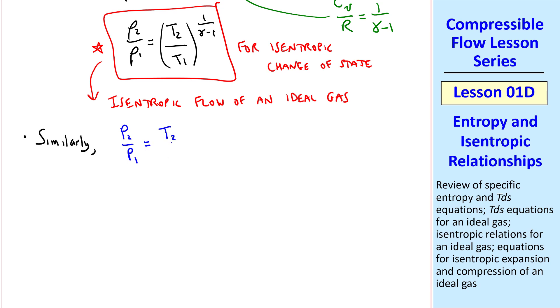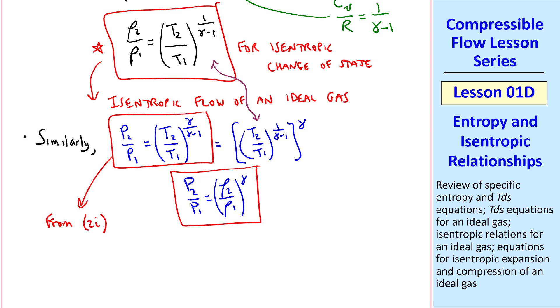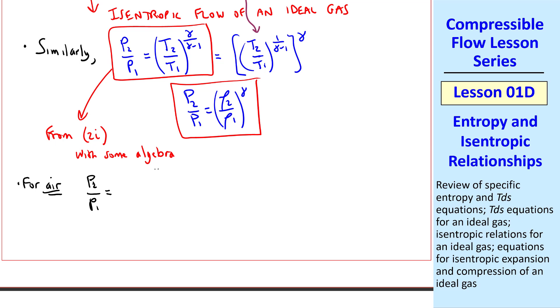Similarly, in terms of pressure, p2 over p1 is t2 over t1 to the gamma over gamma minus 1, which we can write as t2 over t1 to the 1 over gamma minus 1 to the exponent gamma. But this is the same as rho 2 over rho 1, so p2 over p1 is rho 2 over rho 1 to the power gamma. Where we get this equation from our second TDS equation for an ideal gas with some similar algebra that I'm not showing here. For air, p2 over p1 is t2 over t1 to the 3.5 exponent. Similarly, rho 2 over rho 1 is t2 over t1 to 2.5 exponent.